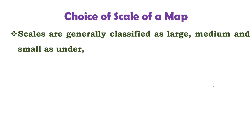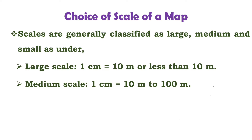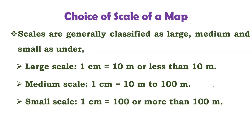Scales are generally classified as large, medium, and small. A scale is said to be large scale when 1 centimeter equals 10 meters or less. It is medium scale when 1 centimeter represents 10 meters to 100 meters. And if 1 centimeter represents 100 meters or more, such a scale is called small scale.